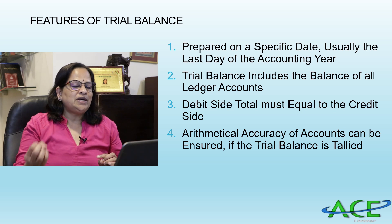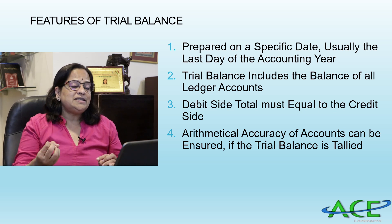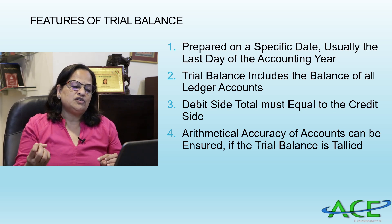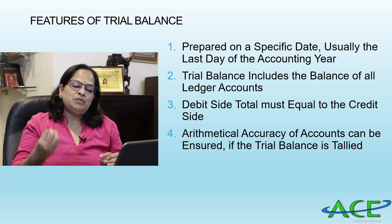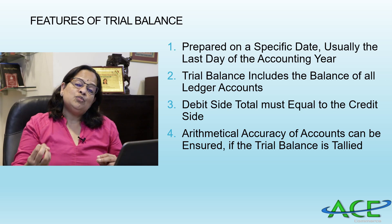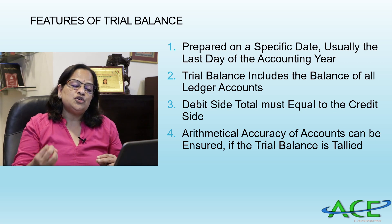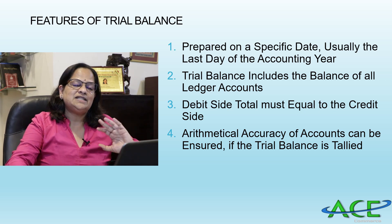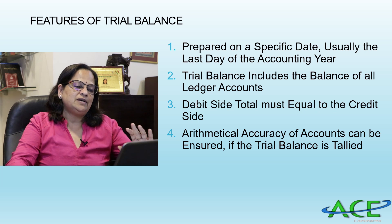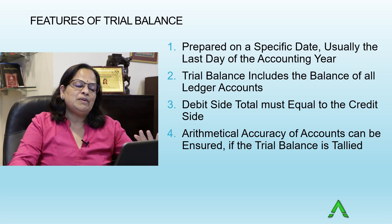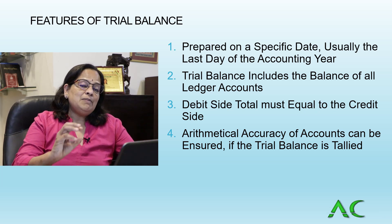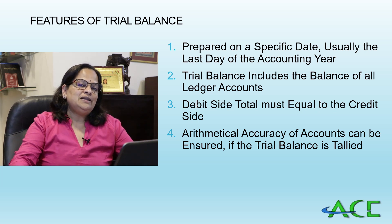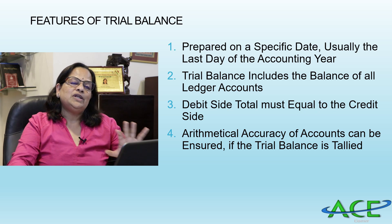The debit side total must equal the credit side — that is the test for checking arithmetical accuracy of books of accounts. Arithmetical accuracy can be ensured when the trial balance tallies. That is an important check: when you do the exam also, if the trial balance tallies, you know your answer is correct.